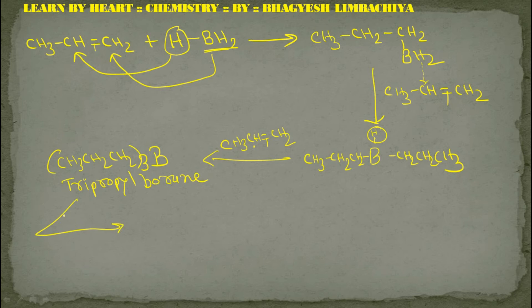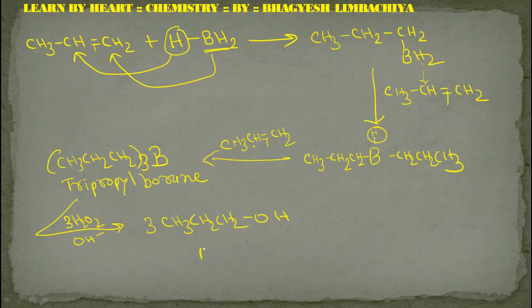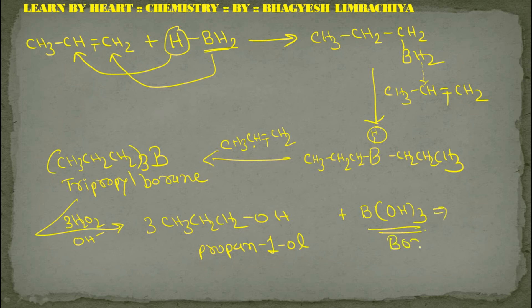Now the tripropylborane reacts with 3H2O2 and OH-. Finally the product we get is propan-1-ol. As a side product we also get H3BO3, which is called boric acid.